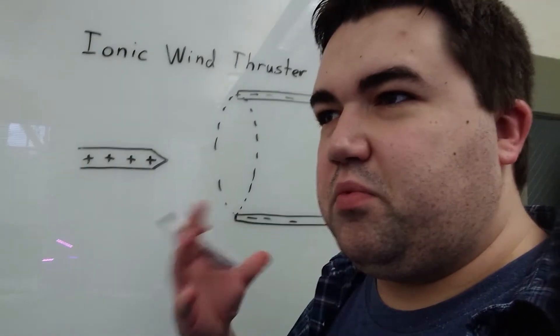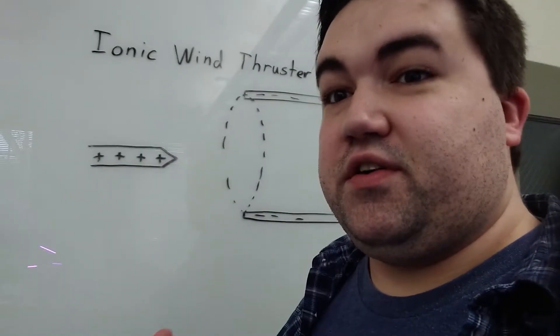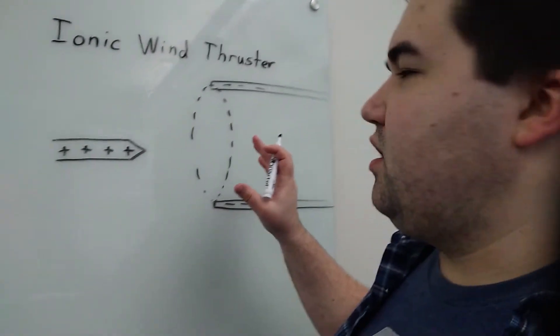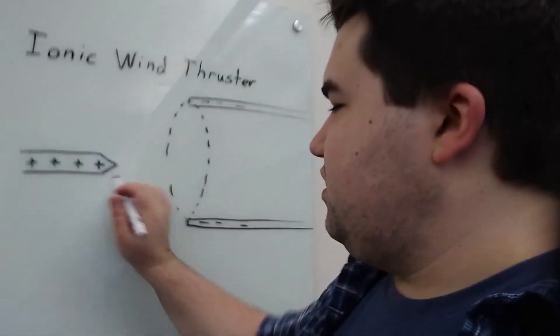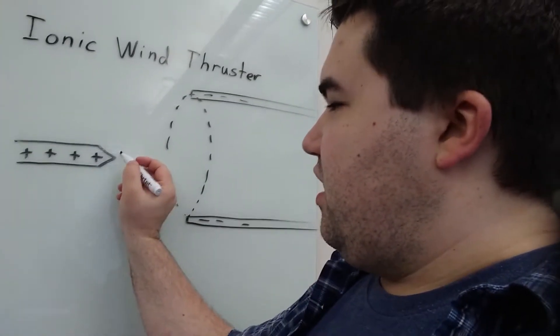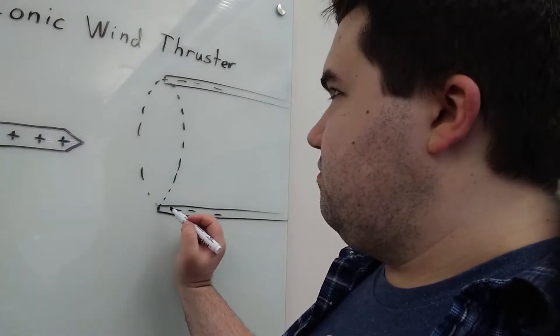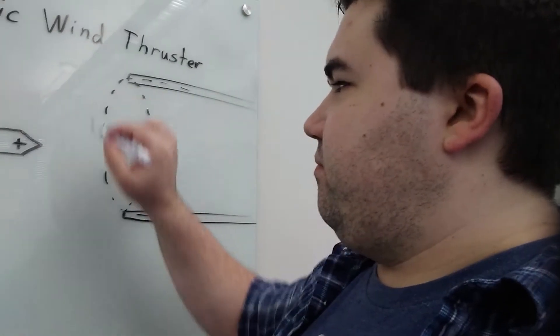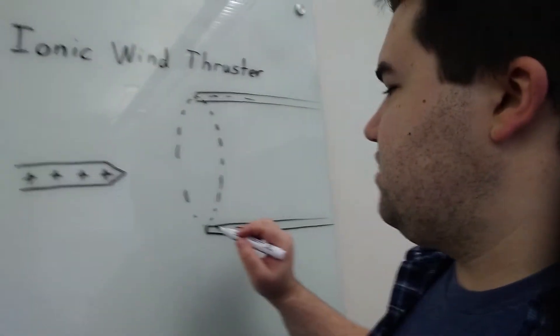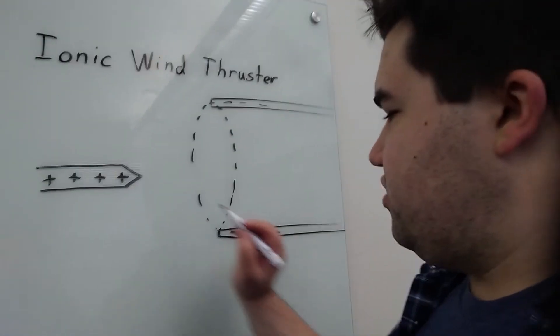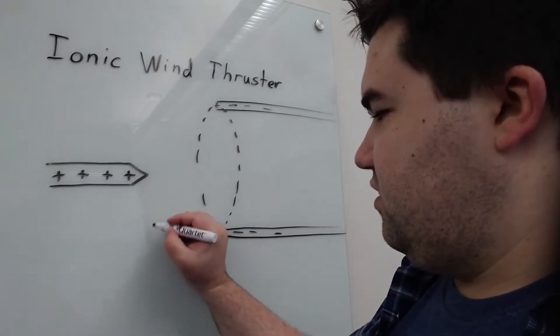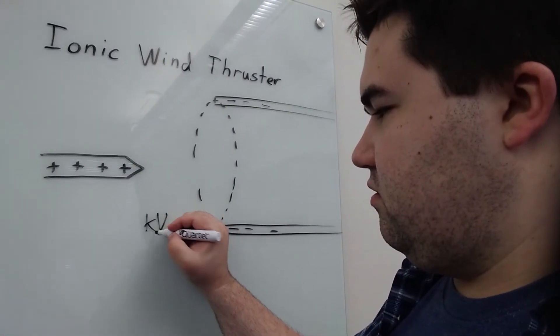The means of producing propulsion in the atmosphere using plasma is what's called an ionic wind thruster. So essentially you generate a really strong electric field between a very pointed anode and a roundish cathode pipe. So very strong positive charge here, very strong negative charge here on the order of several kilovolts per meter.